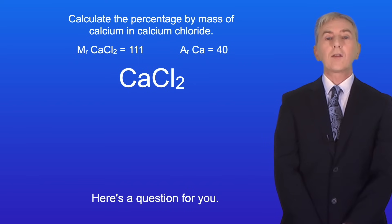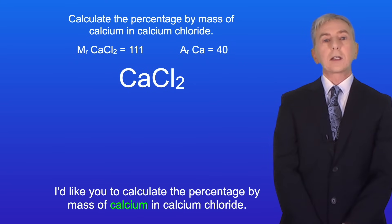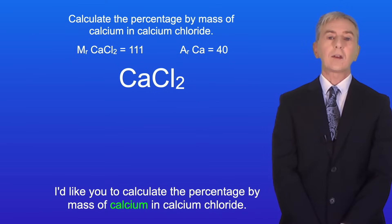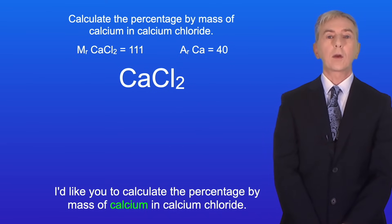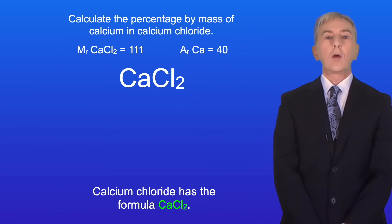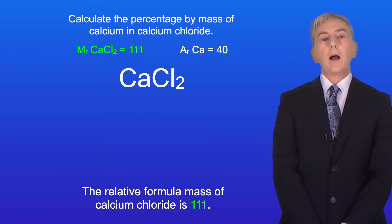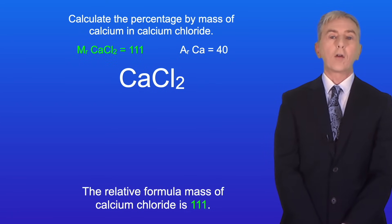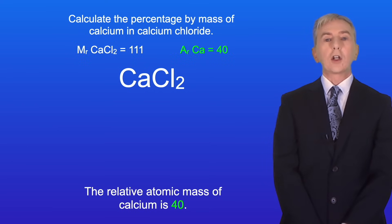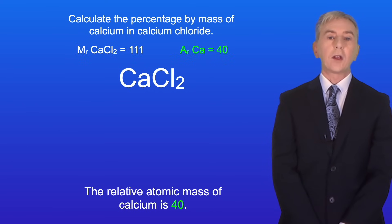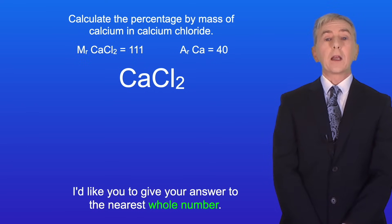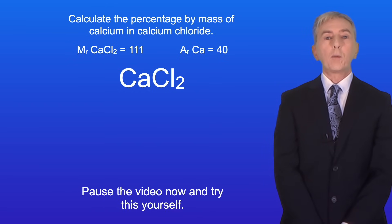Here's a question for you. Calculate the percentage by mass of calcium in calcium chloride. Calcium chloride has a formula CaCl₂ and the relative formula mass of calcium chloride is 111. The relative atomic mass of calcium is 40, and give your answer to the nearest whole number. Pause the video now and try this yourself.